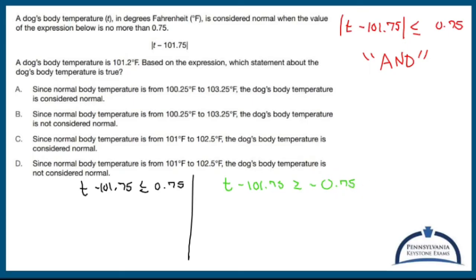Now you solve each inequality the way you normally would. I'm going to add 101.75 to both sides. I add 101.75. Cross you out. And T is going to be less than 102.5.